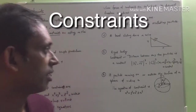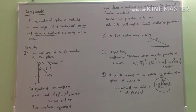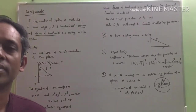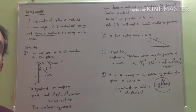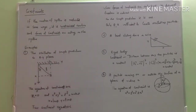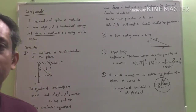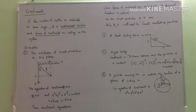Let us get familiar with another idea related with the Lagrangian formulation: the constraints. If the motion of the system is restricted in some ways, we say it is constrained motion. Restrictions imposed on a system are called constraints, and when there are constraints, we say forces of constraints are acting on the system. Let us consider a few examples of constraints acting on systems.